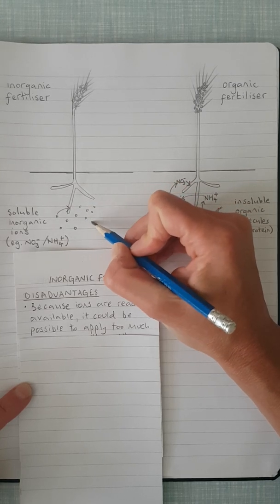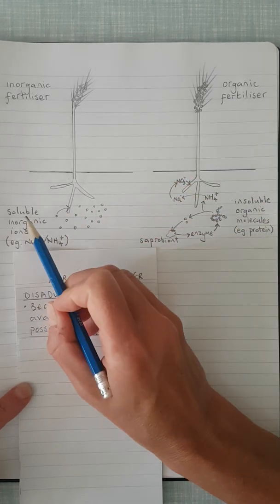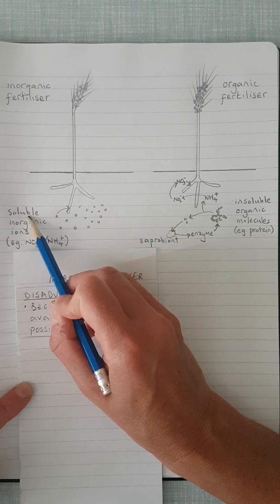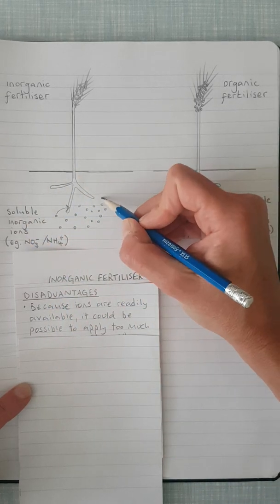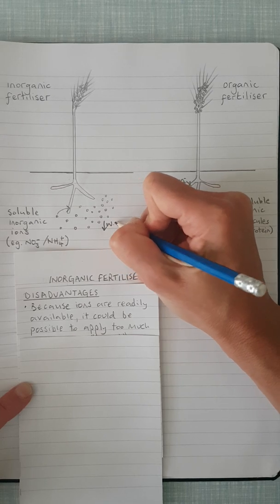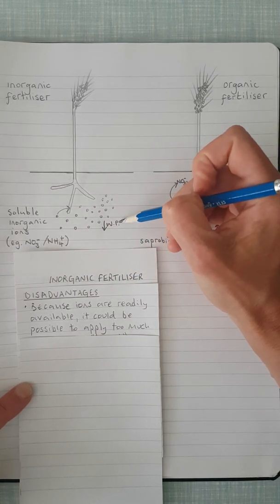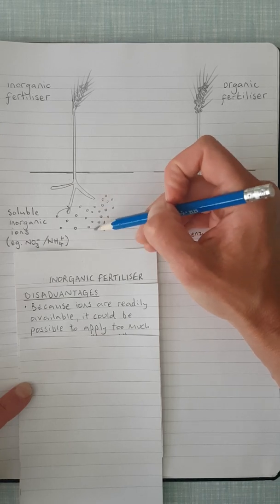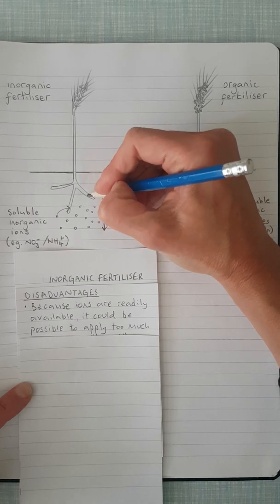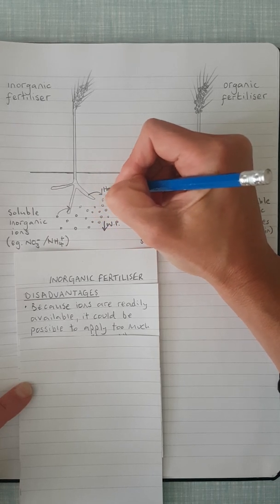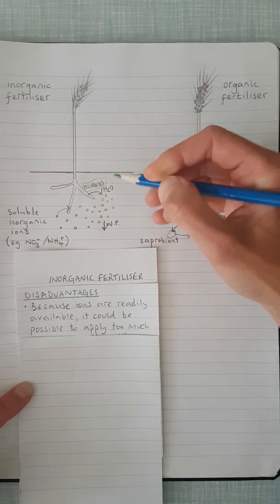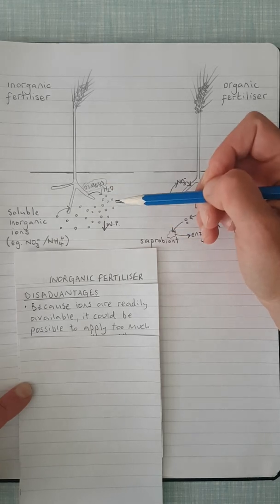So the more inorganic ions you add to the soil, remember that they are soluble, and in your head you should be thinking soluble reminds me of something to do with water potential. So the more ions that are soluble that you're applying to the soil, the lower the water potential. And of course, if you're thinking about water potential, you should also be thinking about osmosis. So if the water potential in the soil is now so low because there are an excess of these soluble inorganic ions, then the water will be drawn from the cells of the plant by osmosis. Now of course, the plant needs water for photosynthesis. So if the water is being drawn out of the plant, that is a disadvantage to the plant.